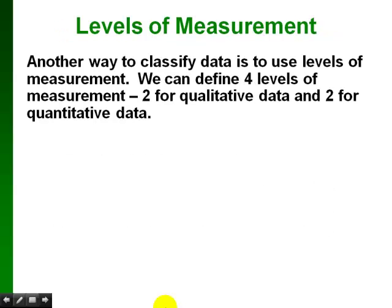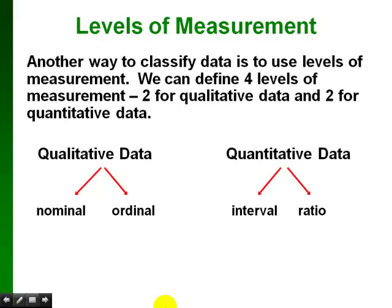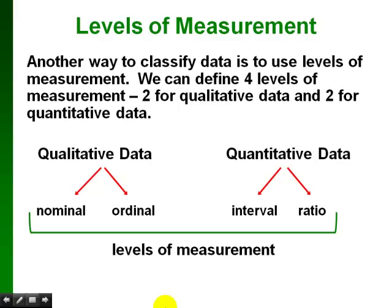We also have another way to classify data called levels of measurement. We can define four levels: two for qualitative data and two for quantitative data. Qualitative data divides into nominal and ordinal; quantitative data divides into interval and ratio.